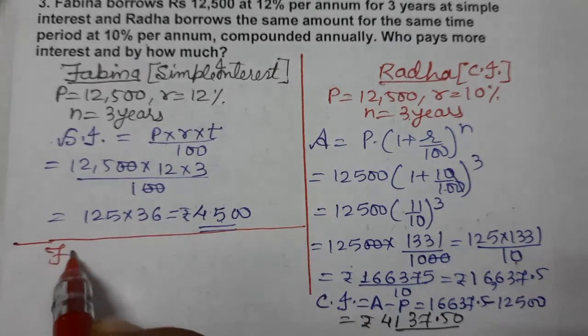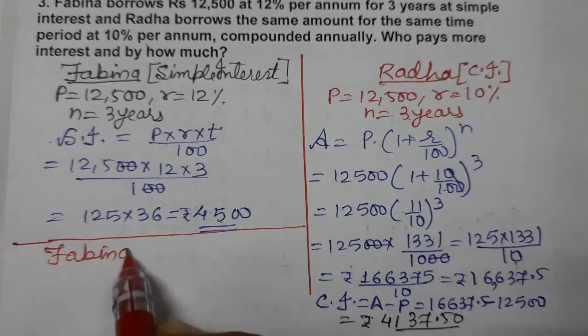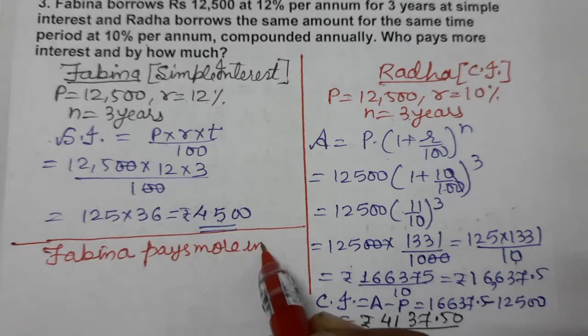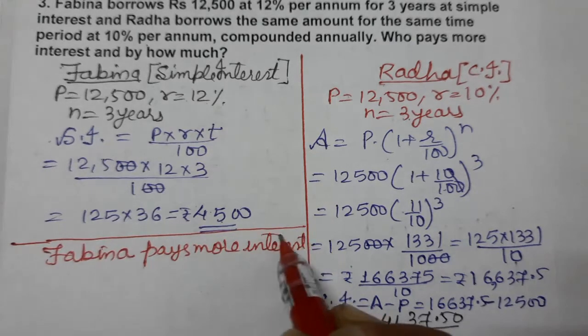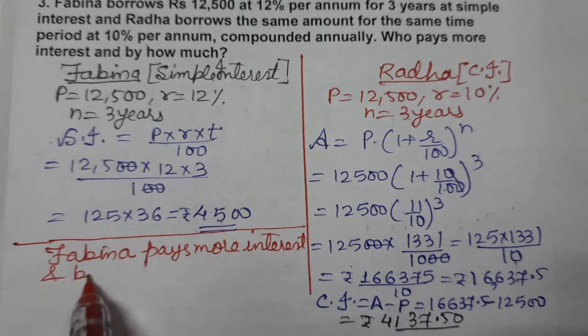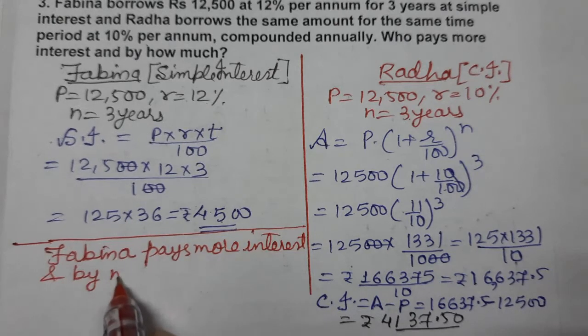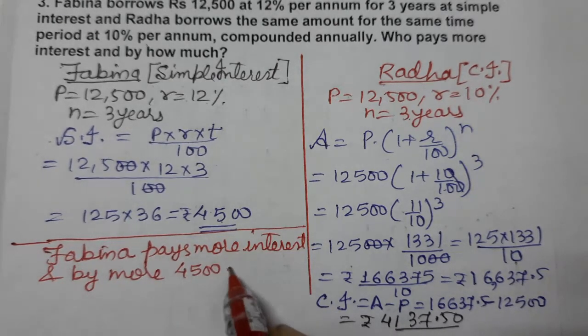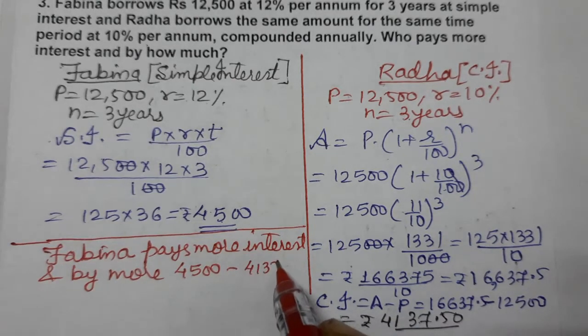Fabina pays more interest. And by how much more? Subtract: 4,500 minus 4,137.50.